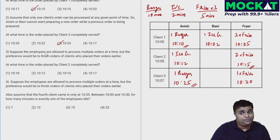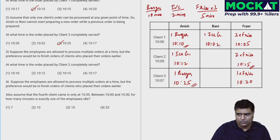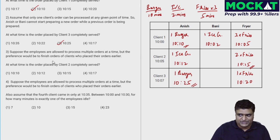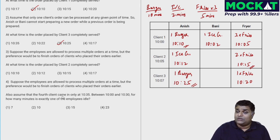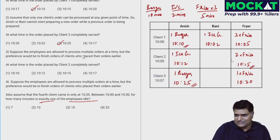For questions 3 and 4, employees are allowed to process multiple orders at a time, with preference given to finishing earlier clients' orders first. So Bani, who's free at 10:02, could start the ice cream for client 2 at 10:05 — no need to wait for the entire previous order to be served. Question 3 asks when client 2's order is completely served, and question 4 asks about idle employees between 10:00 and 10:30 — exactly one employee idle, not both, not none.